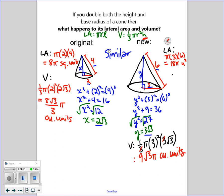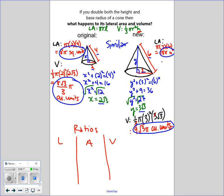So we found the volumes and the areas. How do they compare? Let's take a look at the ratios of the lengths, areas, and volumes. We know the ratio of the lengths is 2 thirds. To find the ratio of the areas, you do 8 pi to 18 pi, which reduces to 4 ninths.